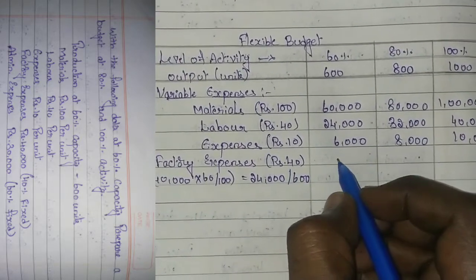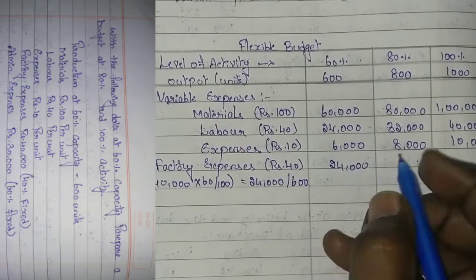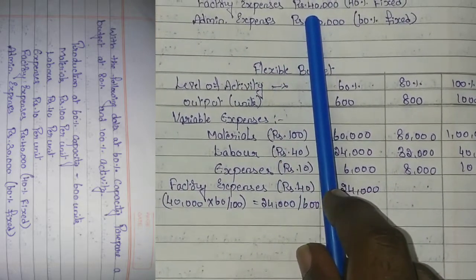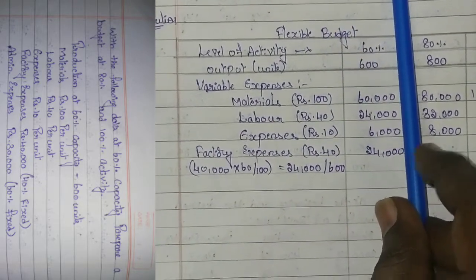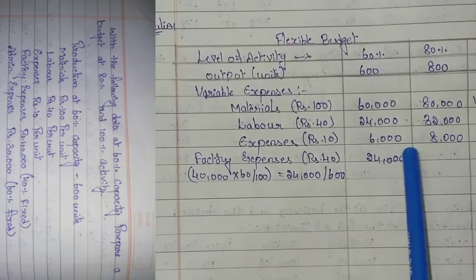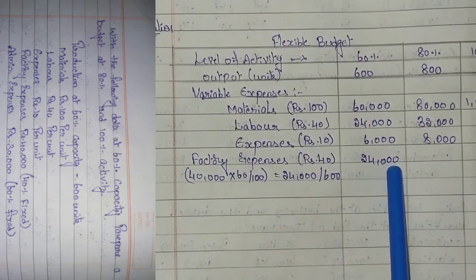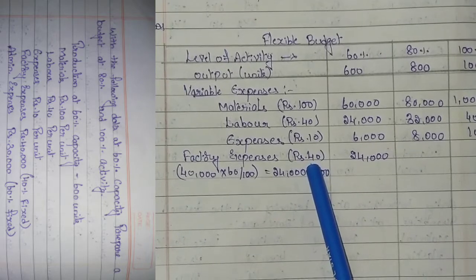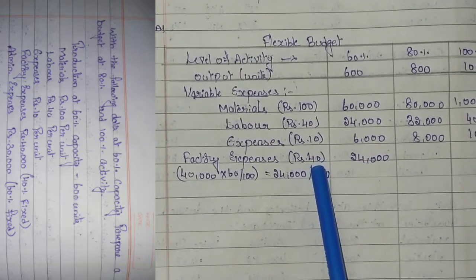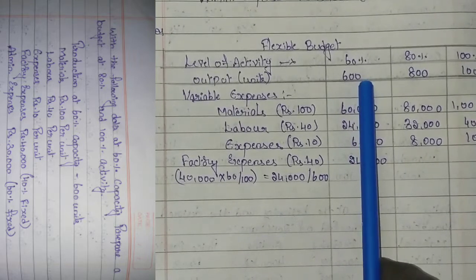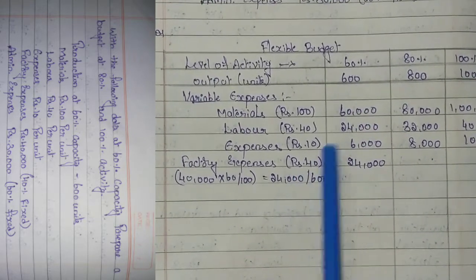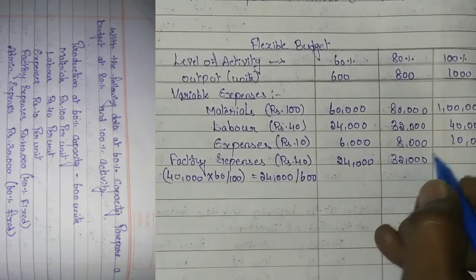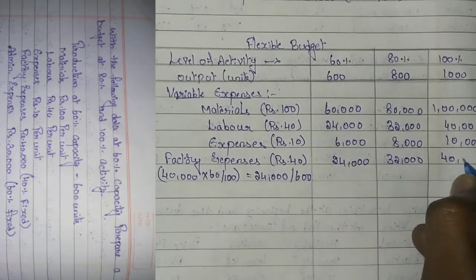So 24,000 is the factory variable expense for 600 units. For 800 units: 800 into 40 rupees equals 32,000. For 1000 units: 1000 into 40 rupees equals 40,000. These are the variable factory expenses at each level of activity.